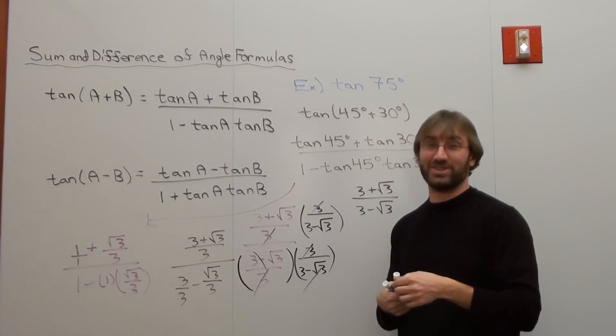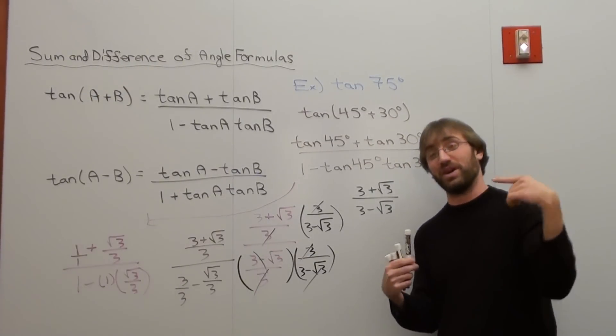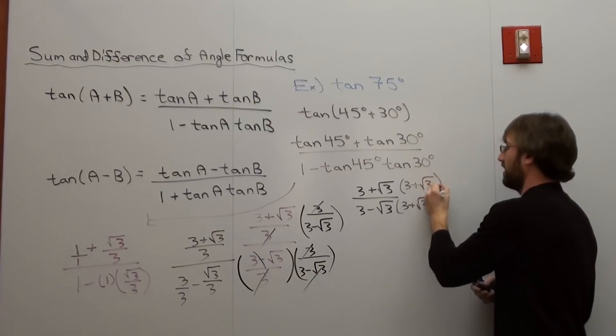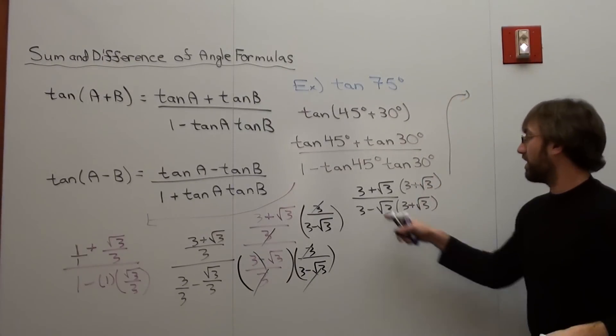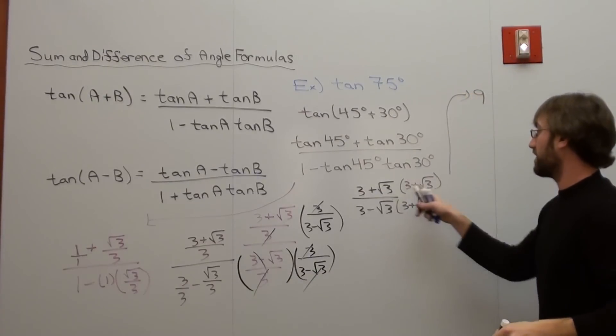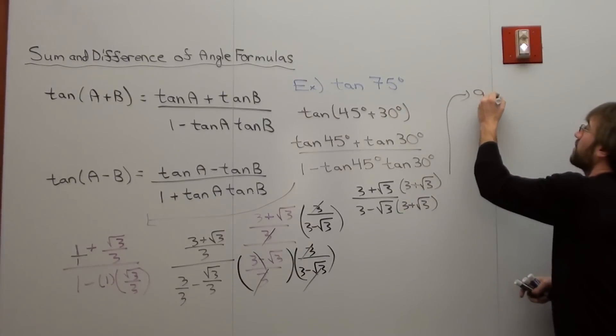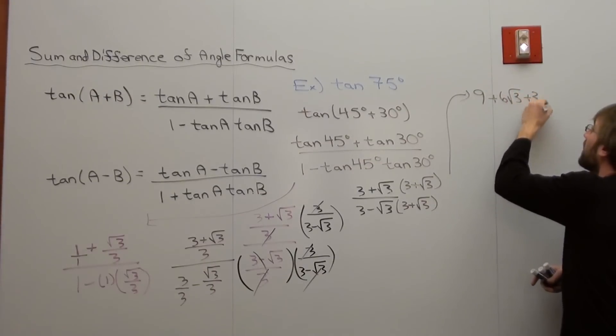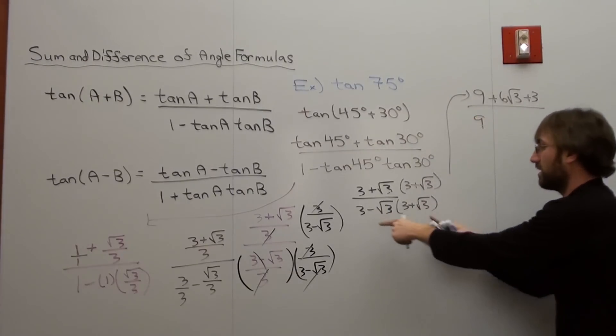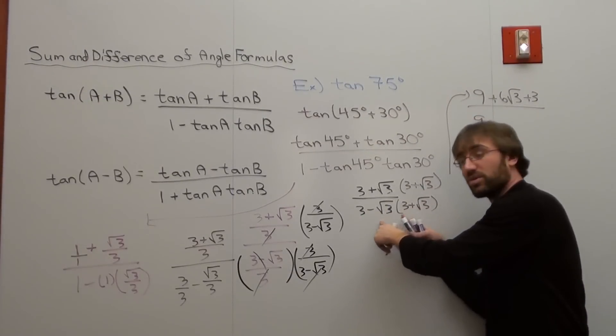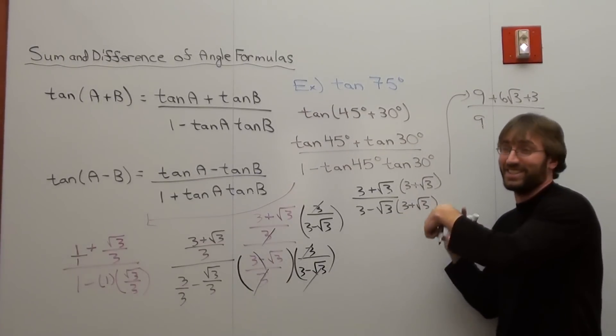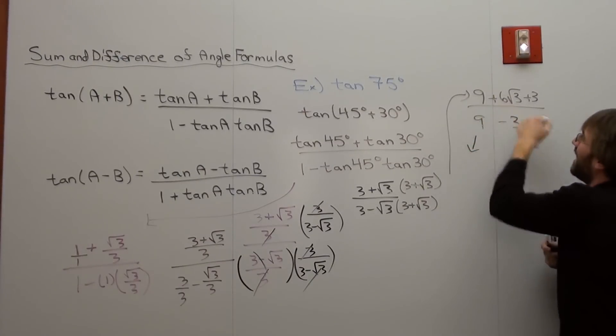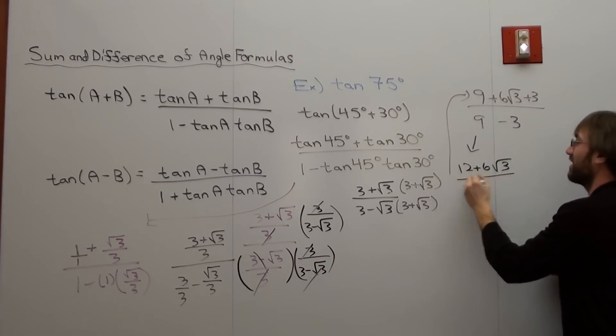Can't have a square root in the denominator, so I've got to rationalize it by multiplying by the conjugate. 3 times 3 is 9. 3 times √3 is 3√3. And then another 3√3, so that's 6√3. Square root of 3 times square root of 3 is 3. And it's all over 9. That's 3√3 minus 3√3, which cancels. And then negative √3 times positive √3 is negative 3.